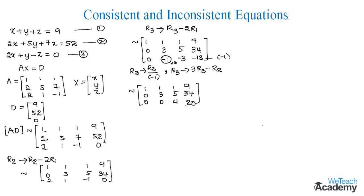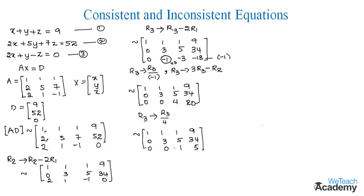Row 3 now has a common factor of 4, so we perform R3 → R3 / 4. The first and second rows remain the same. The third row becomes: 0, 0, 4/4 = 1, and 20/4 = 5. We have now converted the augmented matrix [A|D] into upper triangular form. Let us name this as equation 4.